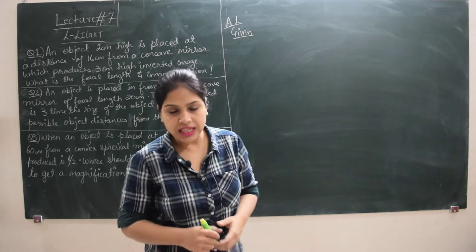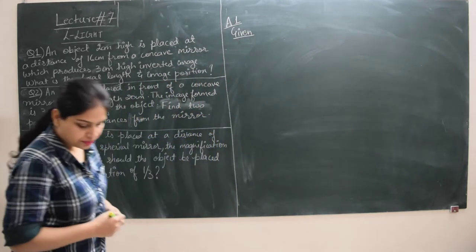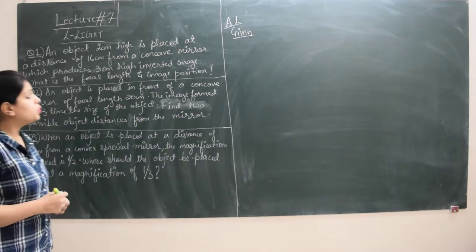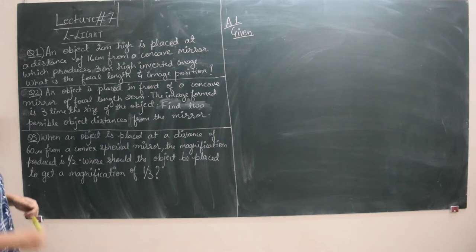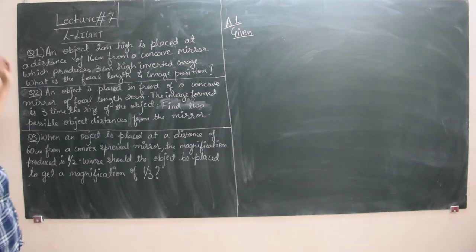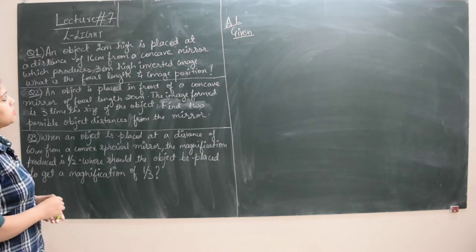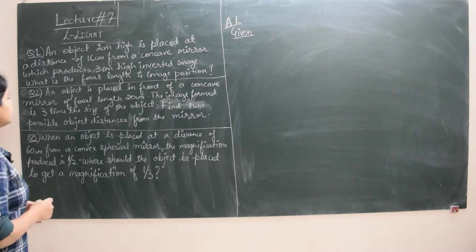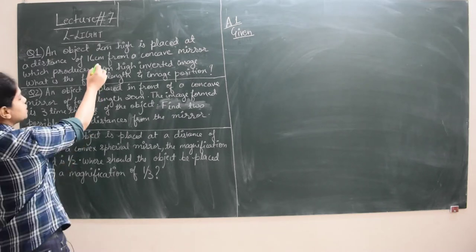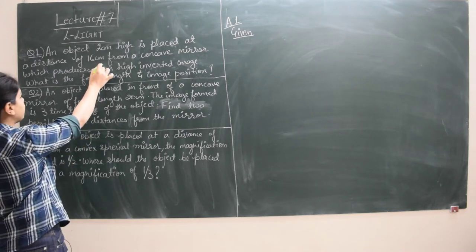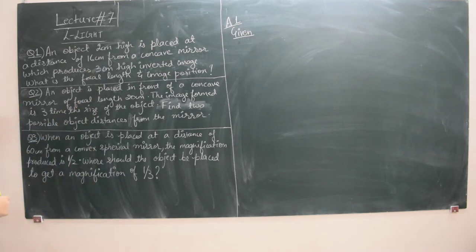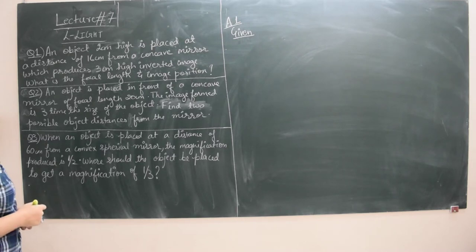Now let's proceed with today's lecture. We'll be doing three numericals today. The first numerical: an object 2 centimeter high is placed at a distance of 16 centimeter from a concave mirror which produces a 3 centimeter high inverted image. What is the focal length and the image position?